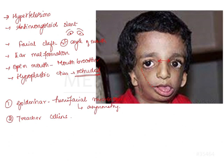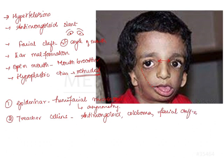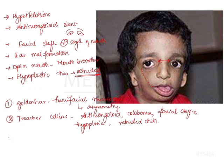Treacher-Collins syndrome, also known as mandibulofacial dysostosis, has characteristic features including anti-mongoloid slant and coloboma of the lower eyelid. There are facial clefts, hypoplasia of the zygomatic and mandibular bone resulting in absence of malar prominence, and a retruded chin due to mandibular hypoplasia. Ear malformations are also found in Treacher-Collins syndrome.